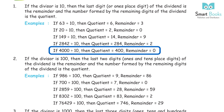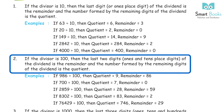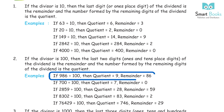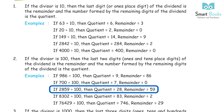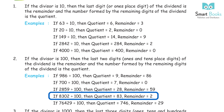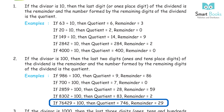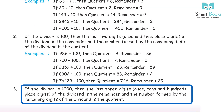Rule 2: if the divisor is 100, the last two digits (ones and tens place) of the dividend form the remainder, and the remaining digits form the quotient. Examples: 986÷100 → quotient 9, remainder 86; 700÷100 → quotient 7, remainder 0; 2859÷100 → quotient 28, remainder 59; 8302÷100 → quotient 83, remainder 2; 76429÷100 → quotient 764, remainder 29.